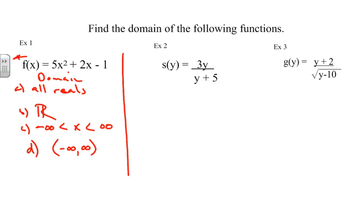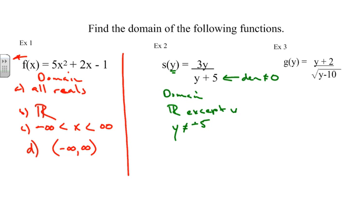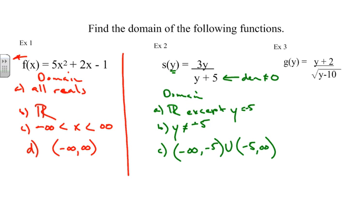It's always all reals unless you see the other things. Here, it starts as all reals, but we do see a denominator, and the denominator cannot equal zero. In this domain, notice our input is y. So y cannot be negative five. We can write this as: all reals except y equals negative five, or in interval notation: negative infinity to negative five, union negative five to infinity. All those different ways are saying the same thing.